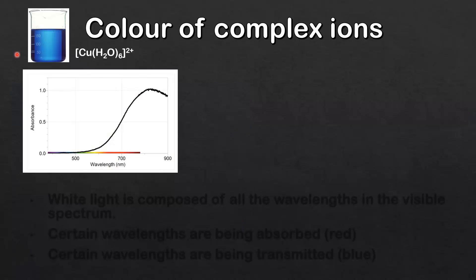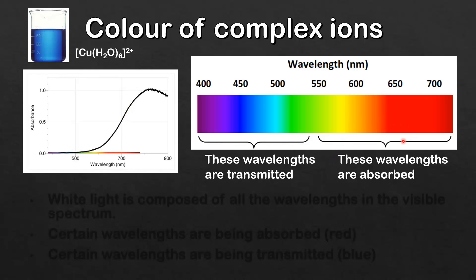When white light passes through a solution of copper 2+ ions some of the wavelengths of the visible light are absorbed and some wavelengths are transmitted. Here we can see an absorption spectrum for the blue copper sulfate solution. Wavelengths of visible light from 400 to about 500 nanometers are being transmitted and from about 550 nanometers onwards these wavelengths of visible light are being absorbed. The wavelengths of light that are being absorbed are mainly orange and red, and the wavelengths of light that are being transmitted are mainly blue and green.